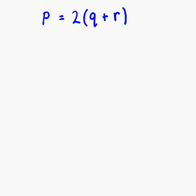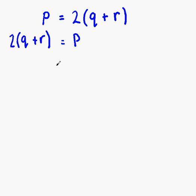Our next formula is p equals 2 bracket q plus r close bracket. In this formula, p is the subject, and we want to change the subject of the formula to q. Like last time, a good idea is to straight away get q on the correct side. If we know that p equals 2(q plus r), then 2(q plus r) is equal to p. All we have done is flipped this round, so we have 2q plus r equals p.